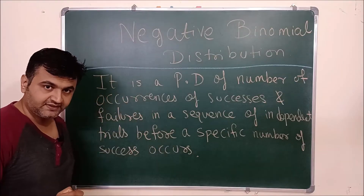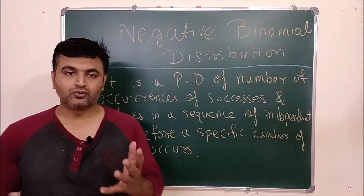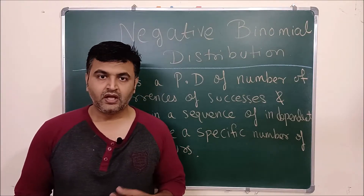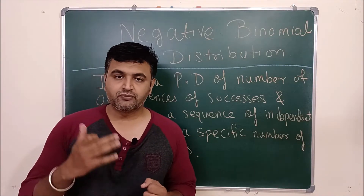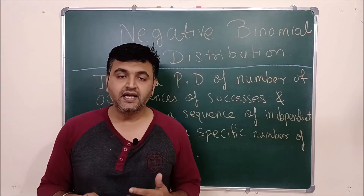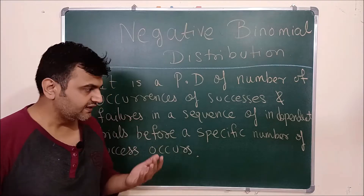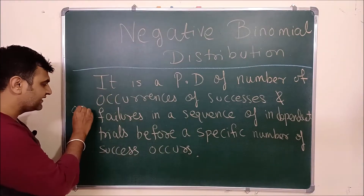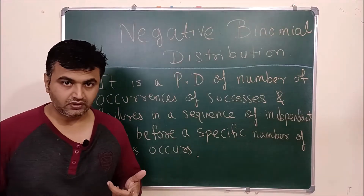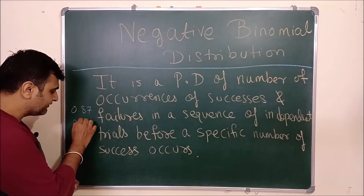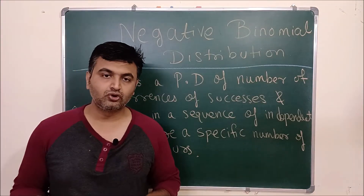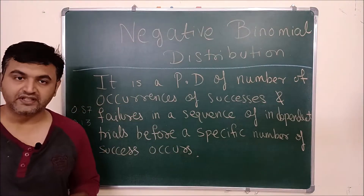Let me explain with an example. Suppose Cristiano Ronaldo, a famous football player — whenever he approaches a goal post and shoots, the probability that he will score a goal is 0.87. And the probability that he will miss scoring a goal is 0.13.